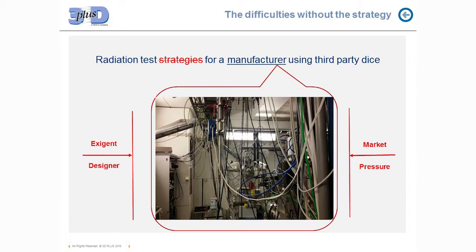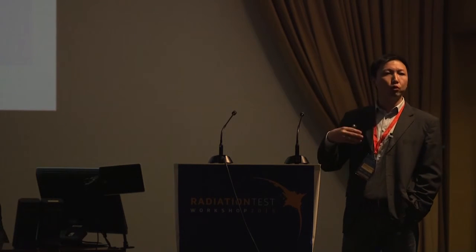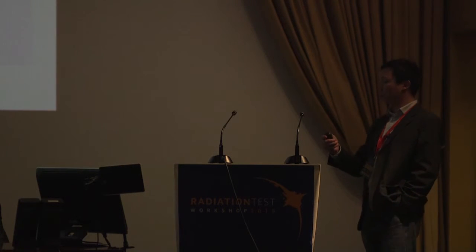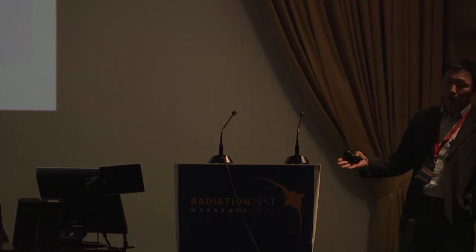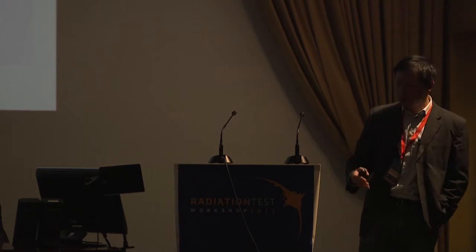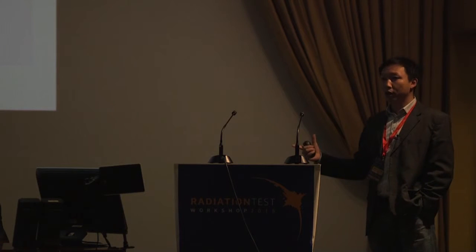What is the situation for manufacturers? On one side, designers ask for all the details of the test — not only the results, but also how you tested it, the cross-section curve, and the results in different operating modes, plus how to mitigate issues. On the other side, we have market pressure. Customers always need higher density and new products, and they ask us to complete a full qualification before the end of life of the product.